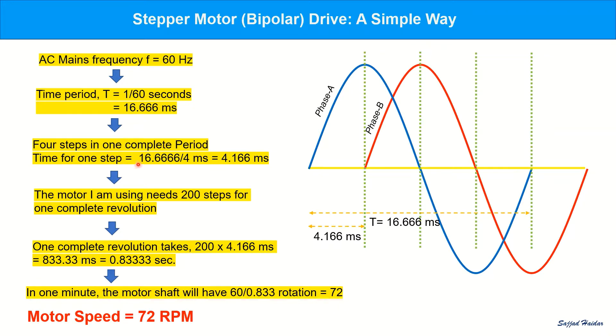The motor I am using needs 200 steps for a complete revolution. One complete revolution takes 0.833 seconds. In one minute, the rotation should be 72. So the motor speed is 72 rpm.